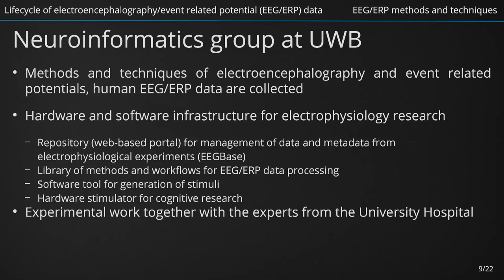The ultimate goal of FAIR principles is to optimize data reuse. To achieve this, metadata and data have to be well described so that they can be replicated and or combined in different settings. It means that data and metadata are richly described with a plurality of accurate and relevant attributes, released with a clear and accessible data usage license, associated with detailed provenance, and meet domain-relevant community standards. While we have mainly talked about data and metadata so far, these principles refer to three types of entities: data, metadata and infrastructure. Registering and indexing data and metadata has to be done in a searchable resource that is an infrastructure component. Now we know that not only data but also metadata and infrastructure are important for long-term management of FAIR EEG data.